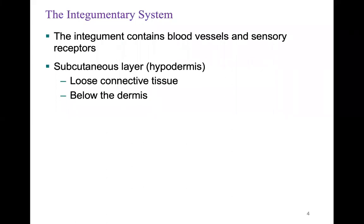The integument contains blood vessels and sensory receptors. The subcutaneous layer of the integumentary system is referred to as the hypodermis. One thing to keep in mind is that the hypodermis, or the subcutaneous layer, is actually not part of the skin. The skin is only the epidermis and dermis. The hypodermis is loose connective tissue, even fat, located below the dermis.